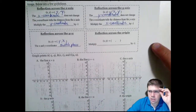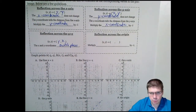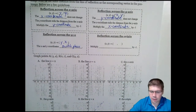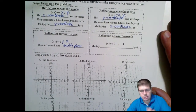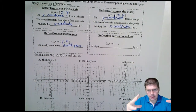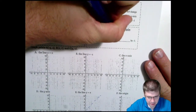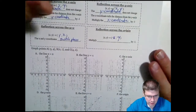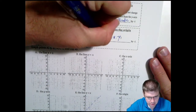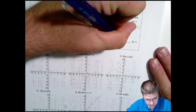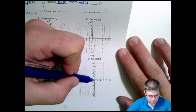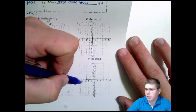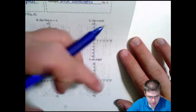And then the last one: if we reflect across the origin — we can reflect across a point as well. You move straight towards that point and out the other side the same distance. Ultimately, we change both signs — we multiply both coordinates by negative one. So if you're four to the right, you'll end up four to the left; and if you were two up, you'll end up two down as you reflect through that origin.